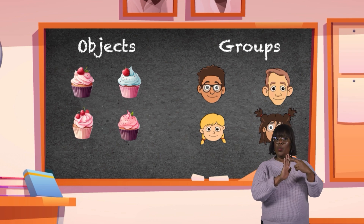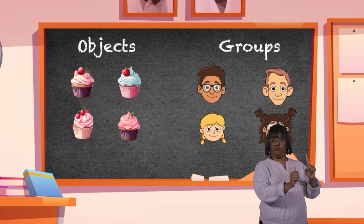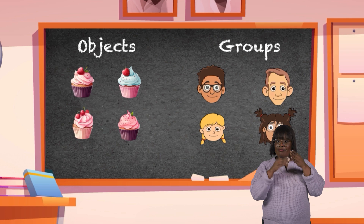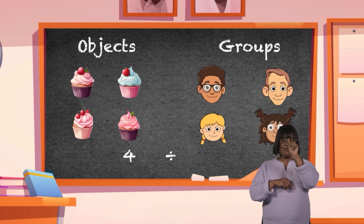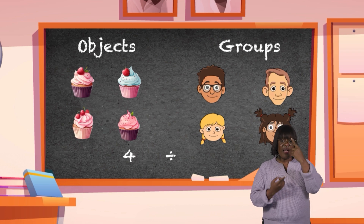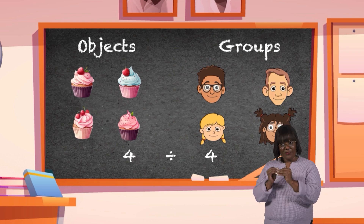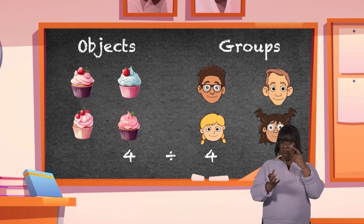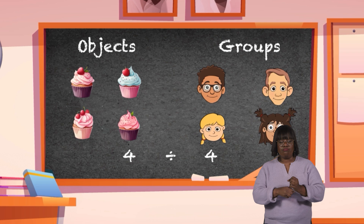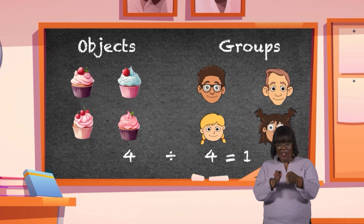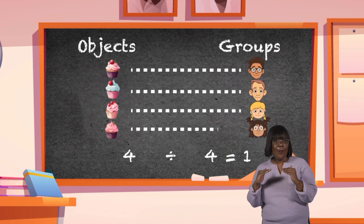An important rule to remember is that when you write a division problem, you always put the objects first. In this case, the objects are the cupcakes. Then, we add the division symbol. What do you think comes next? Yep, it's you and your three friends, which is four people total. Can you see how many cupcakes each person, or in math language, group, will get? That's right. Each person gets one cupcake. That means that four divided by four equals one.